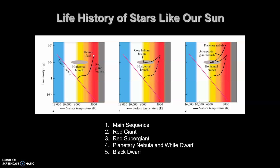Looking at the life history of stars on our HR diagram, we can see that we travel off the main sequence line into a more massive area. We move to the red giant branch, then down to where we have a helium-fusing core, still in red giant territory, and then move back out from the red supergiant to the planetary nebula. For the life history of our Sun: start at main sequence, move to a red giant with a helium-fusing core, then into a planetary nebula and white dwarf.